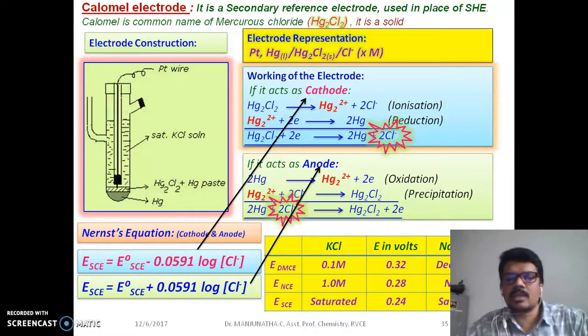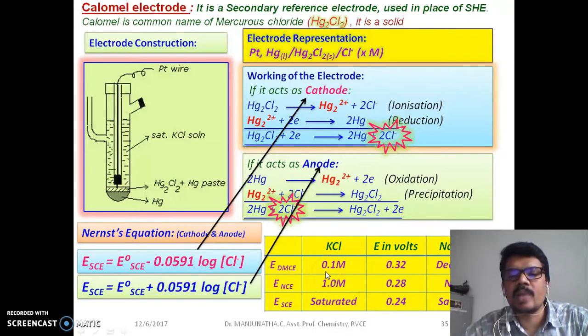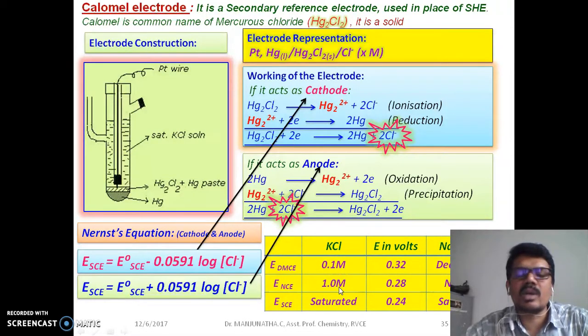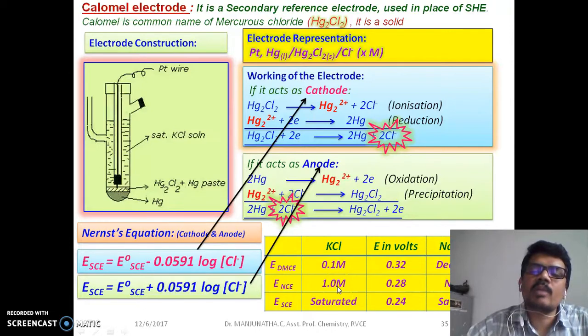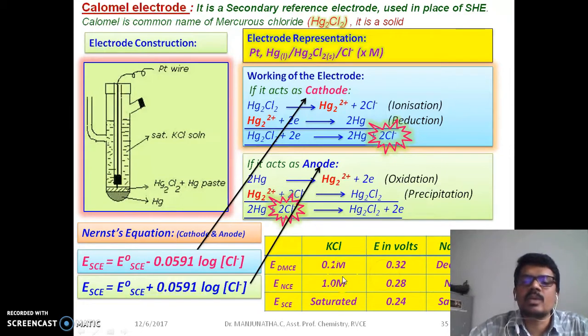So, this is the E0 values of this electrode at different concentration of Cl-, at 0.1 molar. We call it as decimolar. It is also called EDMCE, decimolar calomel electrode, and the SCE value is 0.32 volts. And for one molar or one normal, both are same because KCl, the charge is one, K+. Hence, the normality and molarity both are same. NCE means normal calomel electrode, and its E value is 0.28 volts. And the saturated calomel electrode that we have discussed here is, E is 0.24 volts.